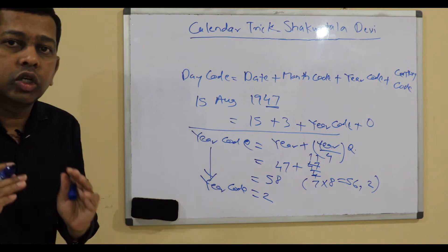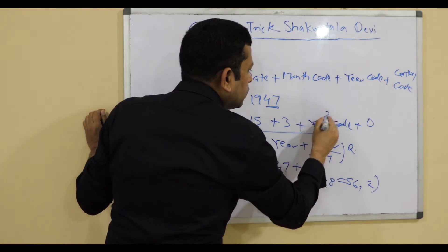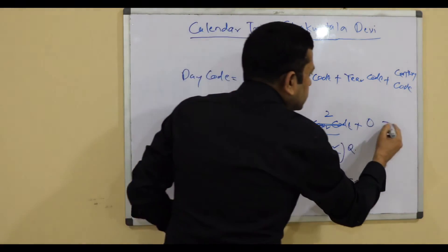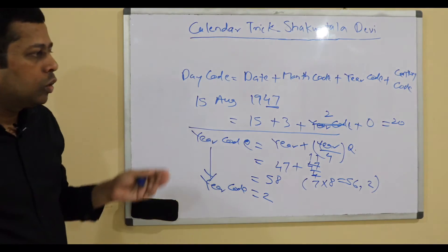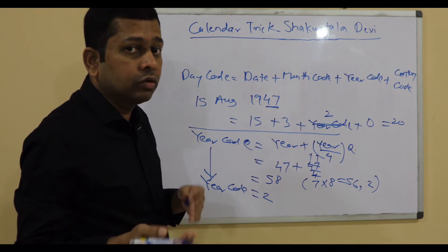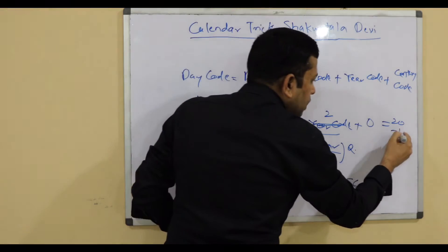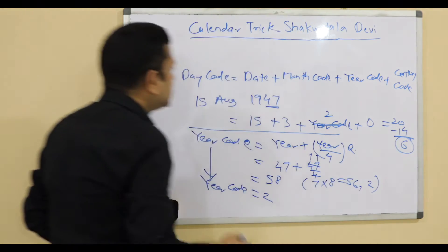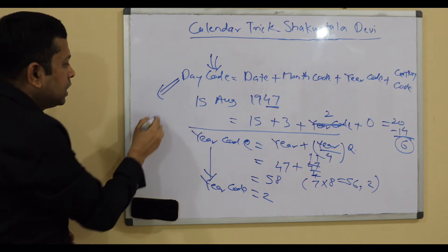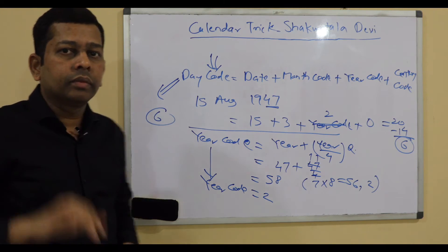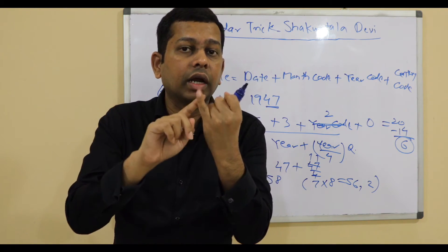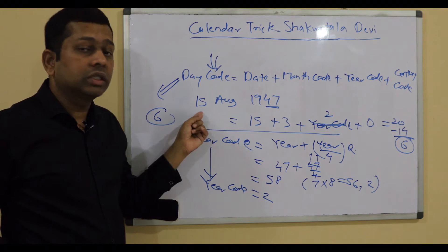The year code is 2. Putting it all together: 15 + 3 + 2 + 0 = 20. Now cast out 7s: 7 × 2 = 14, so 20 − 14 = 6. The day code is 6. Remembering Sunday=1, Monday=2, Tuesday=3, Wednesday=4, Thursday=5, Friday=6 — 6 is Friday. So 15th August 1947 was a Friday. You can verify that on Google or a calendar.